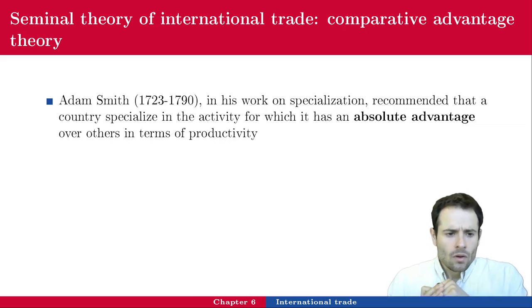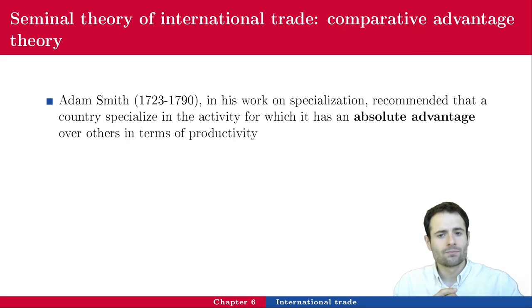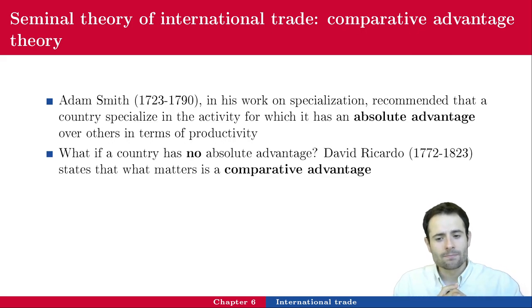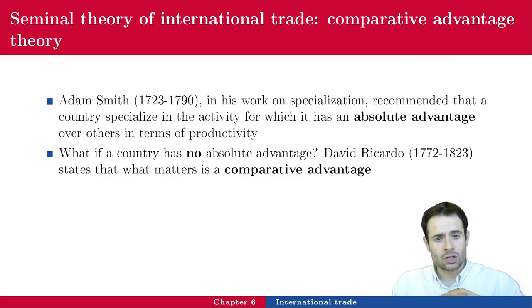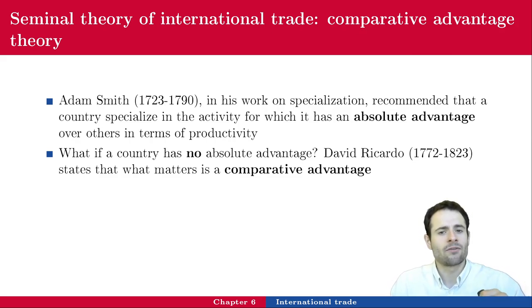This makes sense — if it costs you less to produce a good than your neighbor, you should produce it and sell it to your neighbor. Your neighbor can focus on something it is cheaper for them to produce. But what happens if a country has no absolute advantage? Think about France — wages are high, labor unions are strong, so French firms face higher production costs. Should France import everything and export nothing?